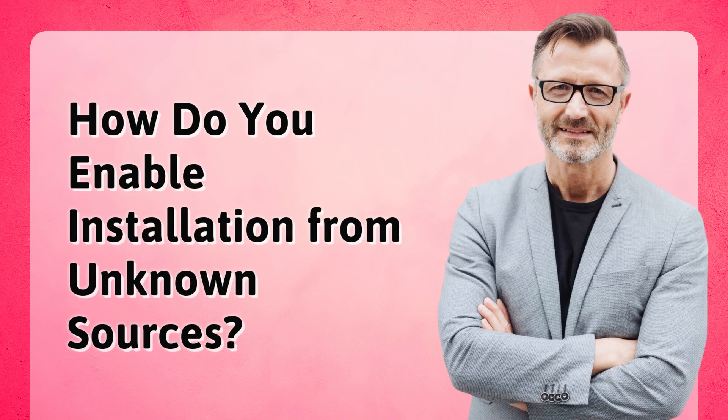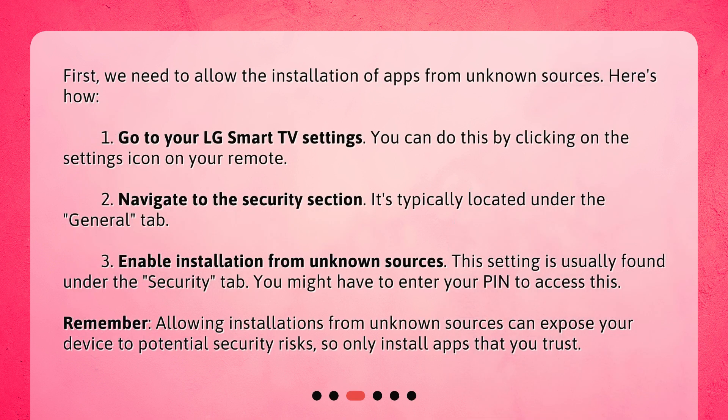How do you enable installation from unknown sources? First, we need to allow the installation of apps from unknown sources. Here's how: 1. Go to your LG Smart TV settings — you can do this by clicking on the settings icon on your remote. 2. Navigate to the security section, typically located under the General tab. 3. Enable installation from unknown sources, usually found under the Security tab. You might have to enter your PIN to access this. Remember, allowing installations from unknown sources can expose your device to potential security risks, so only install apps that you trust.